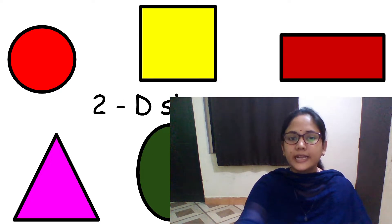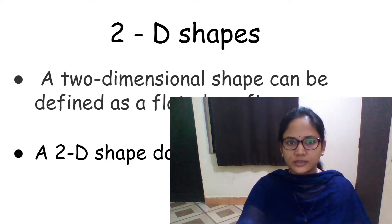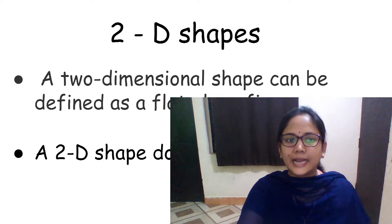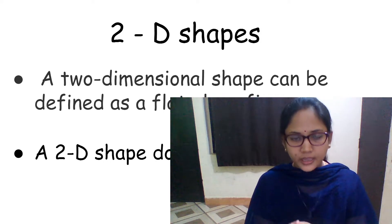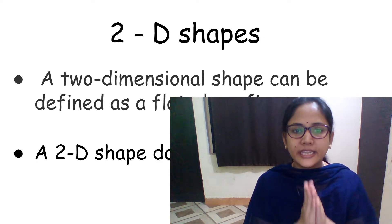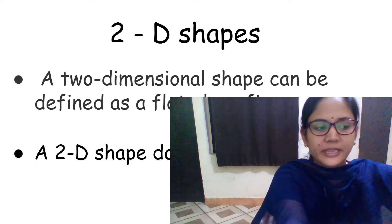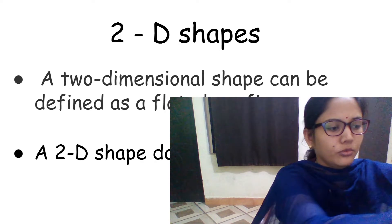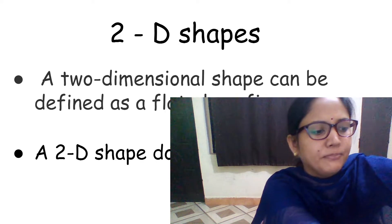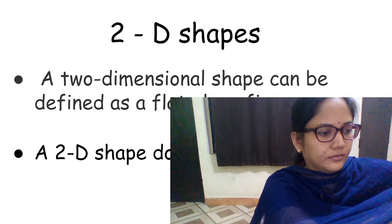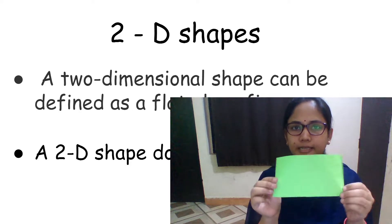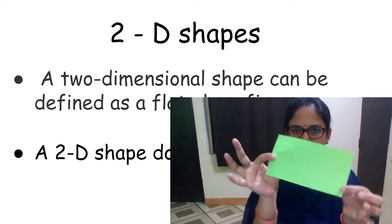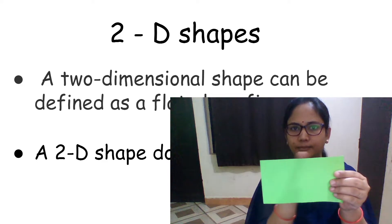Now as I explained in the previous session, a two-dimensional shape can be defined as a flat plane figure. It does not have any depth. Now let me show you. For example, this is a rectangle. It is having some length and it is having some breadth.